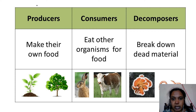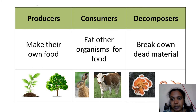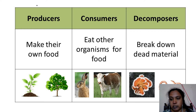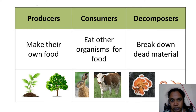Both producers and consumers depend on something which is living, or they make their own source of energy for their survival. But when they die, they are broken down into inorganic substances by the decomposers, and that is the food for the decomposers. Thus an ecosystem will have all three classes of organisms — producers, consumers and decomposers — and only then is it called a living ecosystem.